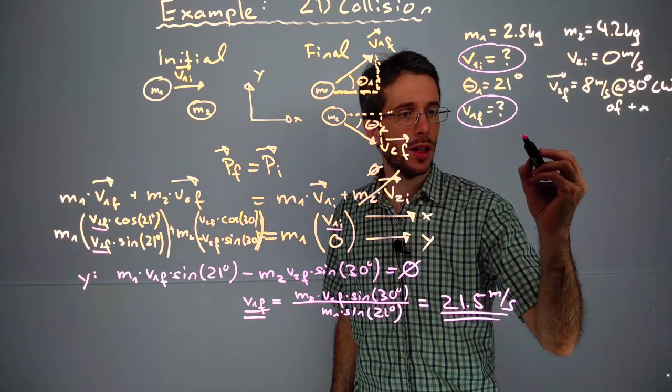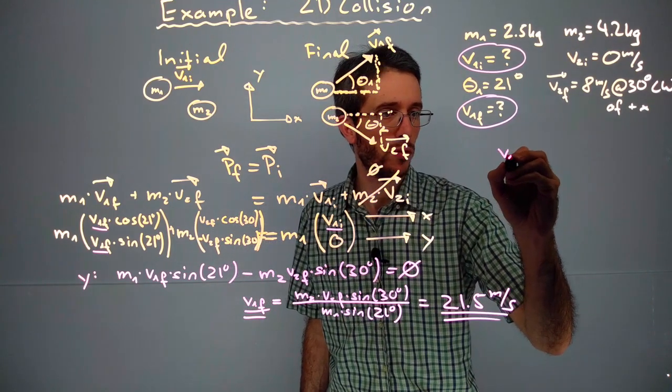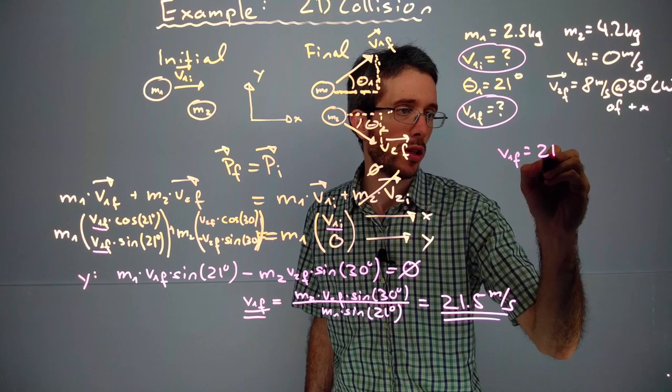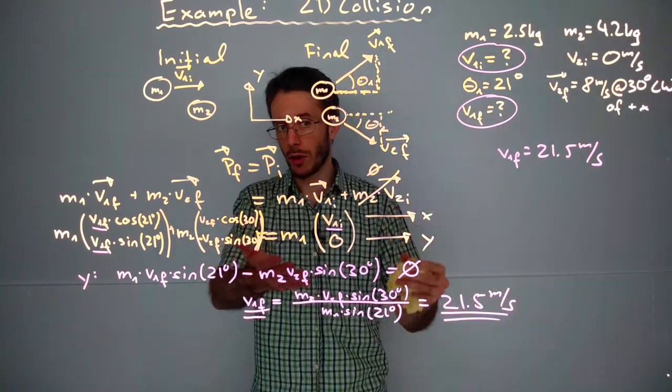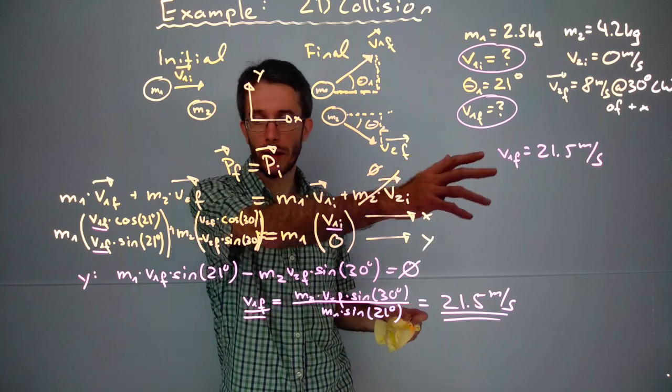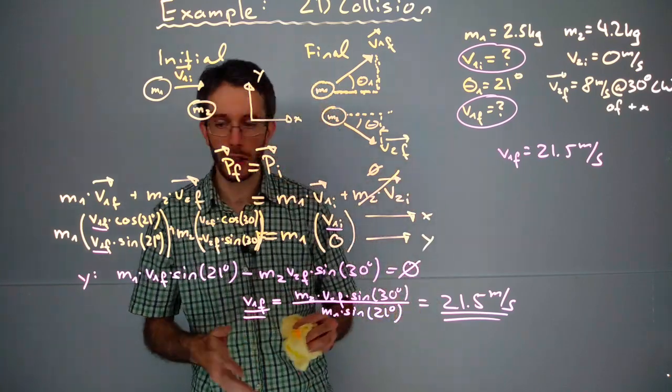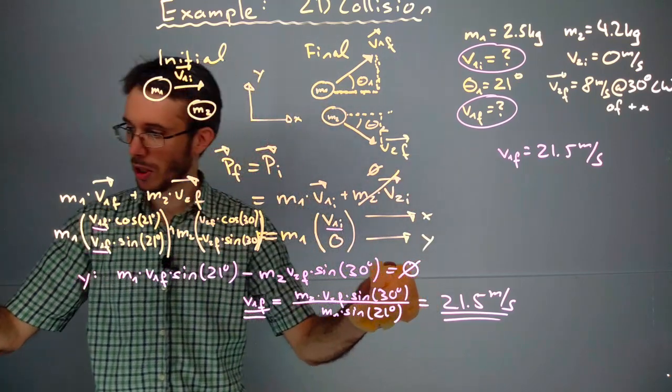I have found that v1 final is 21.5 meters per second. Now I'm going to solve the x equation. I'm going to plug in the number I found from the y equation into the x equation.